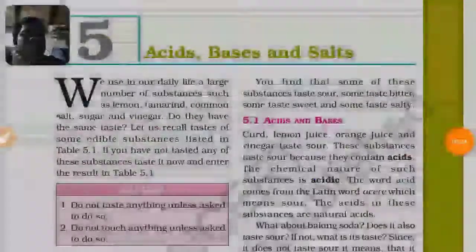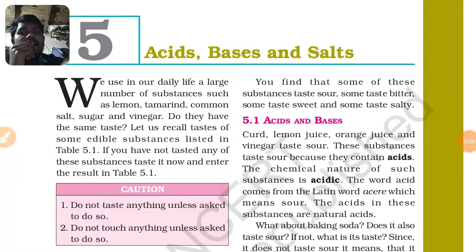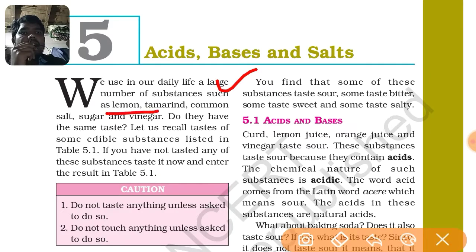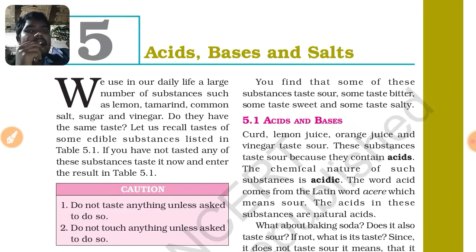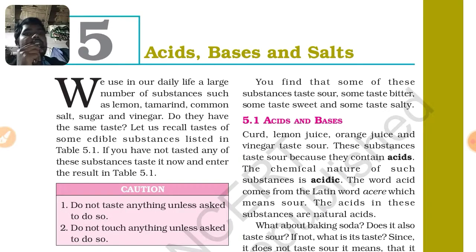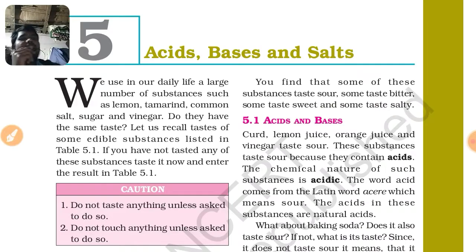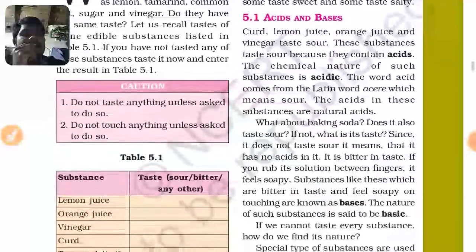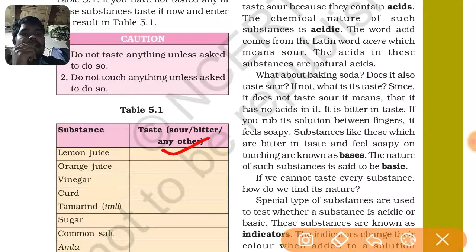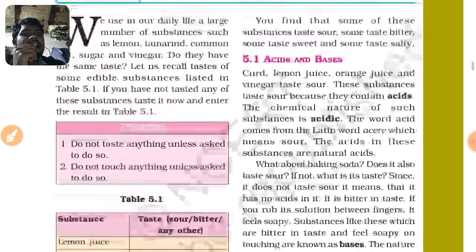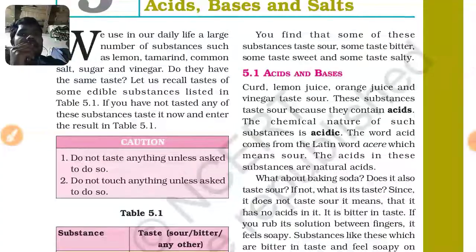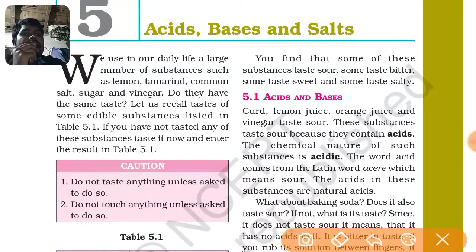In your daily life we have come across so many substances just like lemon, tamarind, common salt, sugar, and vinegar. They are not all having the same taste - each has a different taste. On the basis of taste, some taste sour, some taste bitter, some taste salty, some taste sweet. On the basis of taste, substances are broadly categorized into two types: one is acid, another one is base.